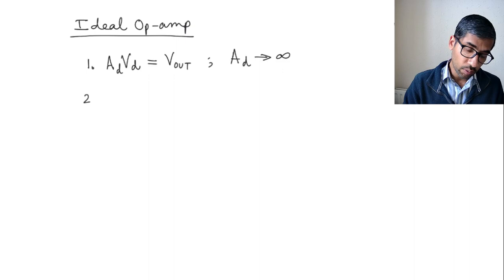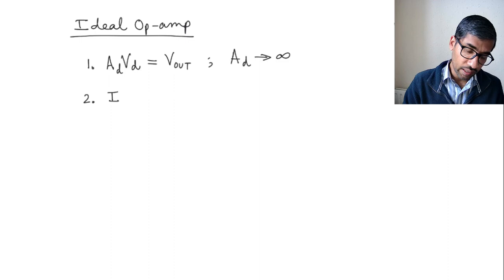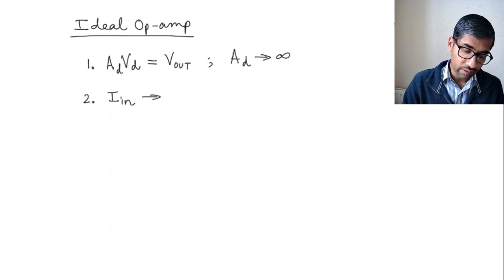The second assumption that we made is that the currents flowing into the input terminals are almost zero. So I_in tends to zero.